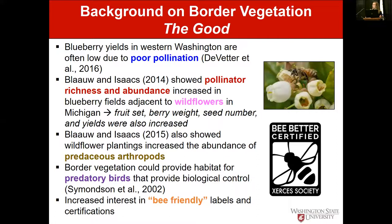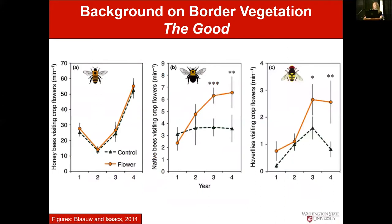In follow-up papers they demonstrated that revenue increased through these modified habitats. They also looked at other types of insects and found an increased abundance of predaceous arthropods that could serve as biological control. There's also an impact border vegetation might have on predatory birds — insectivorous birds that could feed on pest insects, or raptors that could feed on birds like starlings and cedar waxwings that predate on blueberry fruit. Additionally, there's growing interest from producers in bee-friendly certifications and labels.